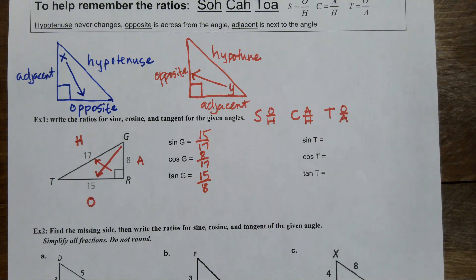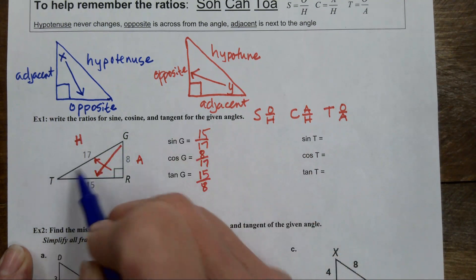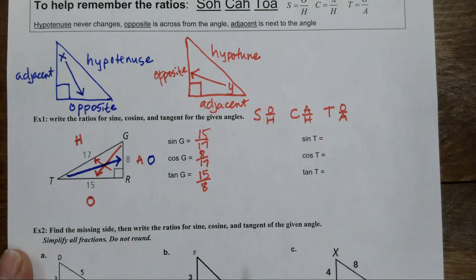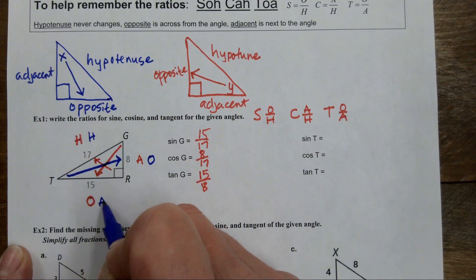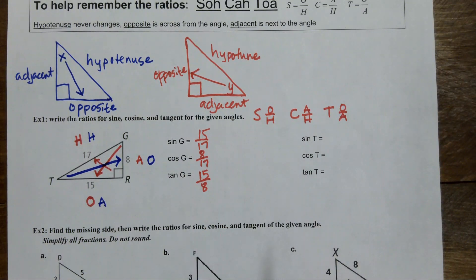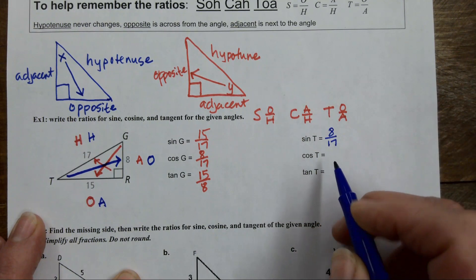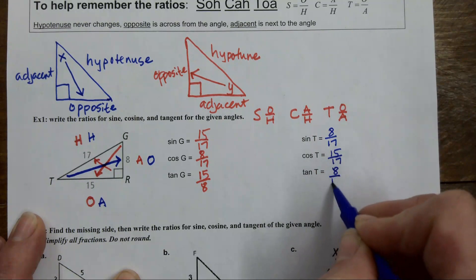Cosine of G is adjacent over hypotenuse. Tangent of G is opposite over adjacent. I'm going to change colors for the next one. If I'm interested in T, then T's opposite is 8. The hypotenuse never changes. The remaining side is the adjacent. So when I'm looking at T, the sine of T would be 8 over 17. Cosine is 15 over 17. Tangent is 8 over 15.